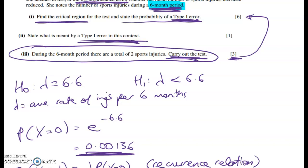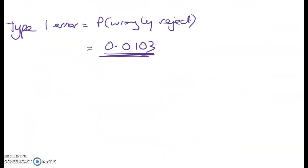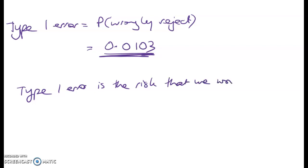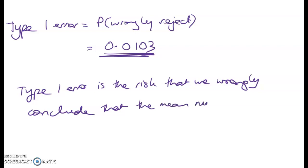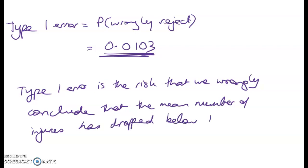A type 1 error is the risk that we wrongly conclude that the mean number of injuries has dropped below 1.1 per month, when it actually hasn't. In this case, that probability is 0.0103.